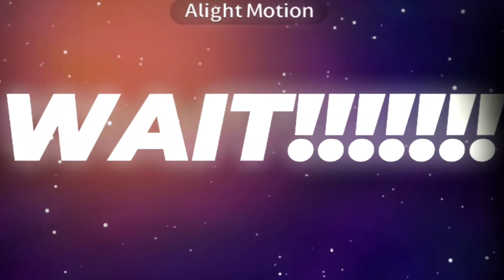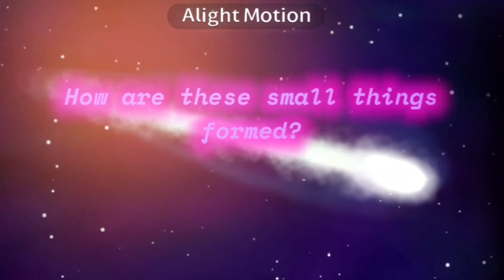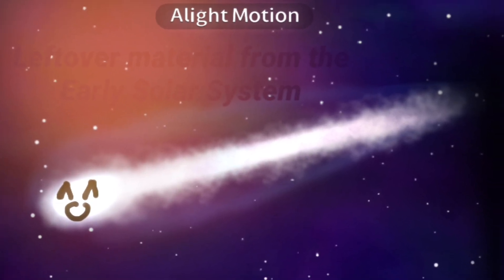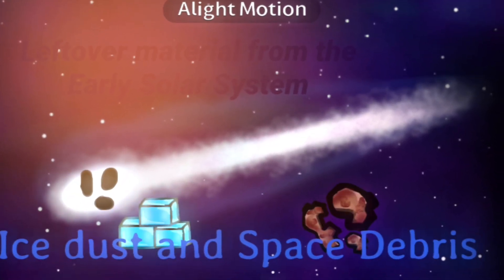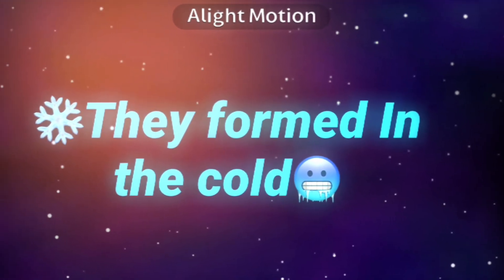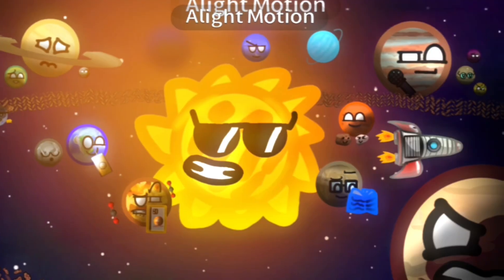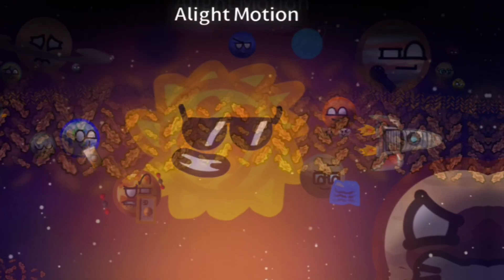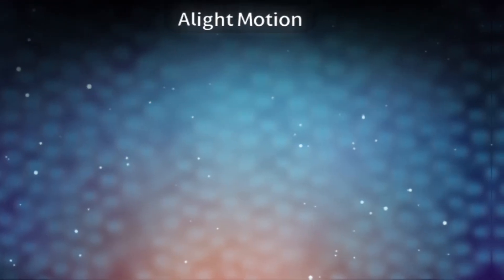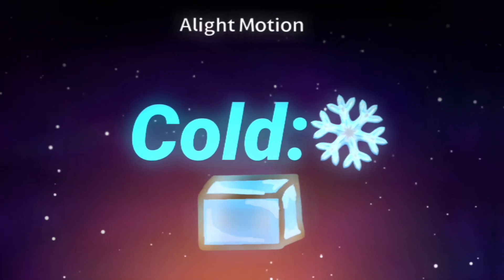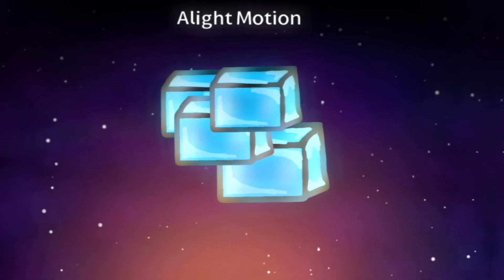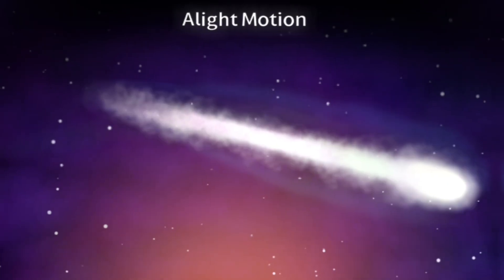Wait! How do comets even form? Comets are formed from leftover material from the early solar system, primarily ice, dust and debris. They are thought to have formed in the cold outer regions of the solar system, specifically in the Kuiper Belt and the Oort Cloud, where temperatures are low enough to allow ice to form. As these icy particles collided and clumped together, they eventually form the comets we see today.